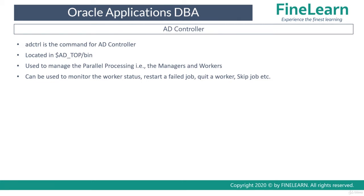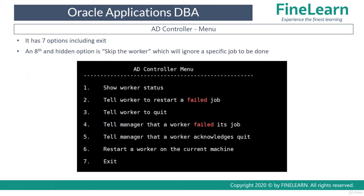The main purpose of AD Controller is to manage the managers and workers in parallel processing. Using AD CTRL, we can perform several activities. When you run AD CTRL it shows several prompts. For example, you can check the status of a worker, restart a failed job, quit a specific hanging worker, tell the manager that a worker failed its job, acknowledge a killed worker process at the OS level, and restart a worker from the current machine.